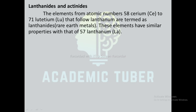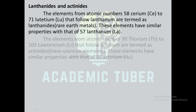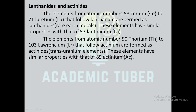The elements from atomic number 58 (cerium) to 71 (lutetium) that follow lanthanum are termed as lanthanides, also known as rare earth metals. These elements have similar properties to lanthanum (atomic number 57). The elements from atomic number 90 (thorium) to 103 (lawrencium) that follow actinium are termed as actinides, also known as trans-uranium elements. These elements have similar properties to actinium (atomic number 89).